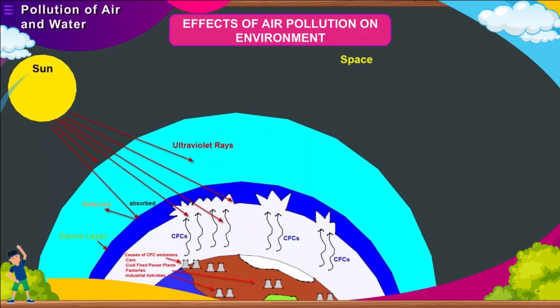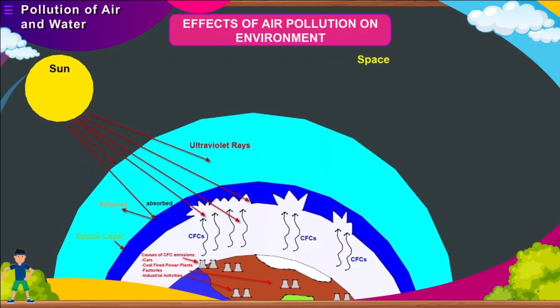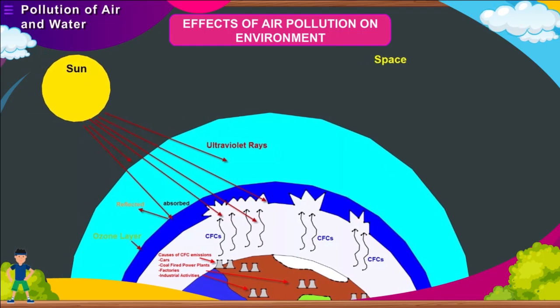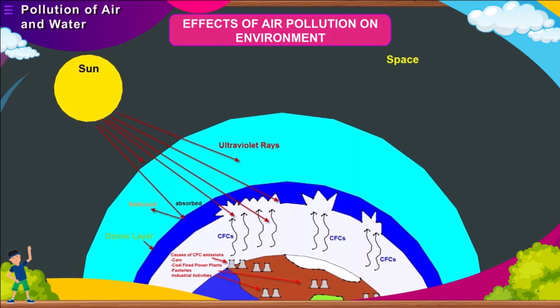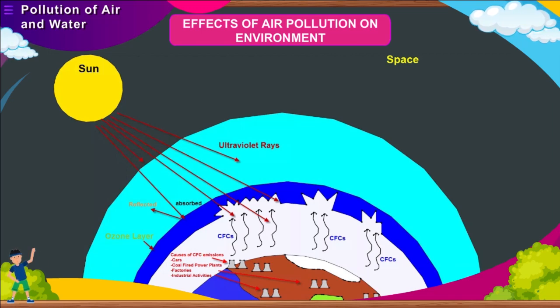Effects of air pollution on the environment. The major effects of air pollution are the increase of greenhouse gases, the depletion of the ozone layer and acid rain.